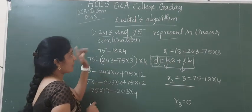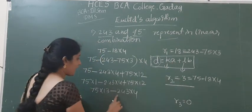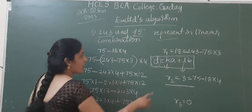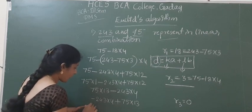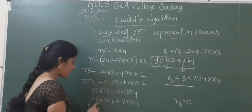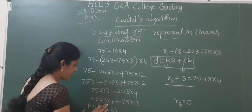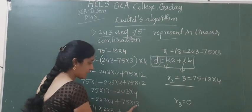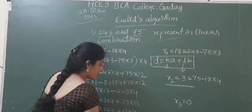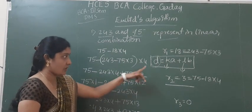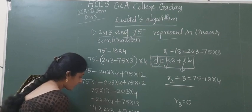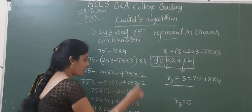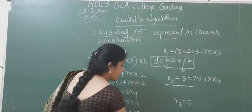The standard equation for linear combination is: D = K·A + L·B, where A and B are the given integers, K is the coefficient of A, L is the coefficient of B, and D is the GCD. So here A = 243, B = 75. Writing in standard form: 3 = (−4)×243 + 13×75. So K = −4 and L = 13.